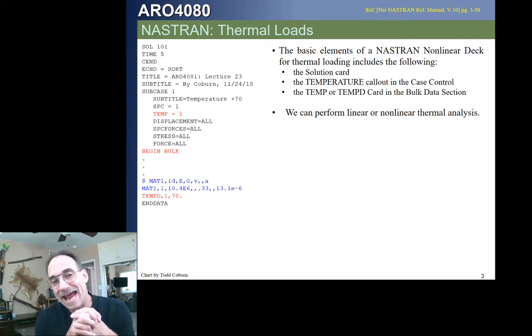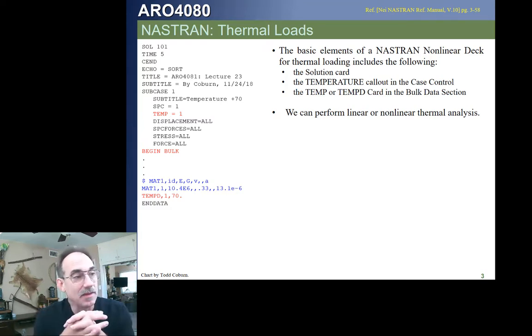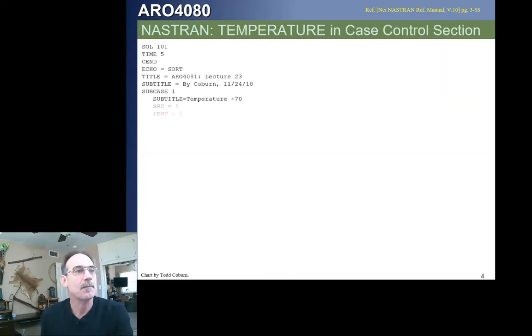We find the first card we're going to need to add is a temperature card. This card in the case control basically specifies that we do want temperature effects and what the ID is of the card or cards that tells us how that analysis is going to be performed. Then you look down, and in its most basic element, this particular deck uses the temperature D card, the temp D card, to impose the temperature. This is going to require a little bit of care, even though it's rather straightforward.